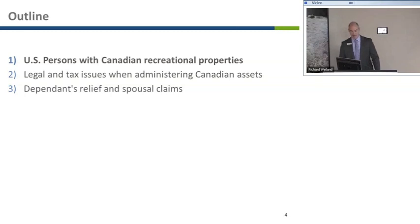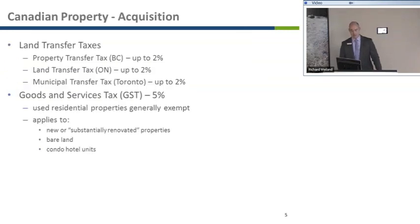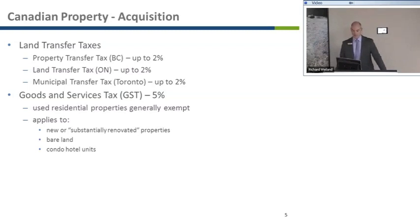Beginning with Part 1, when U.S. persons hold Canadian recreational properties, starting with acquisition, there are issues on acquisition that U.S. persons may not be accustomed to dealing with. First, we have property transfer taxes or land transfer taxes in Ontario. These really add to the cost of acquisition for the U.S. person acquiring a property here.